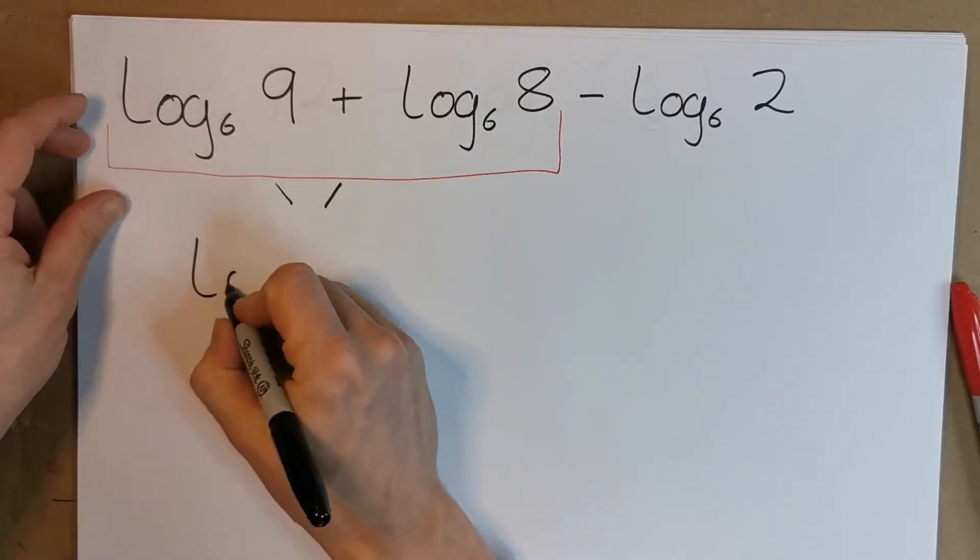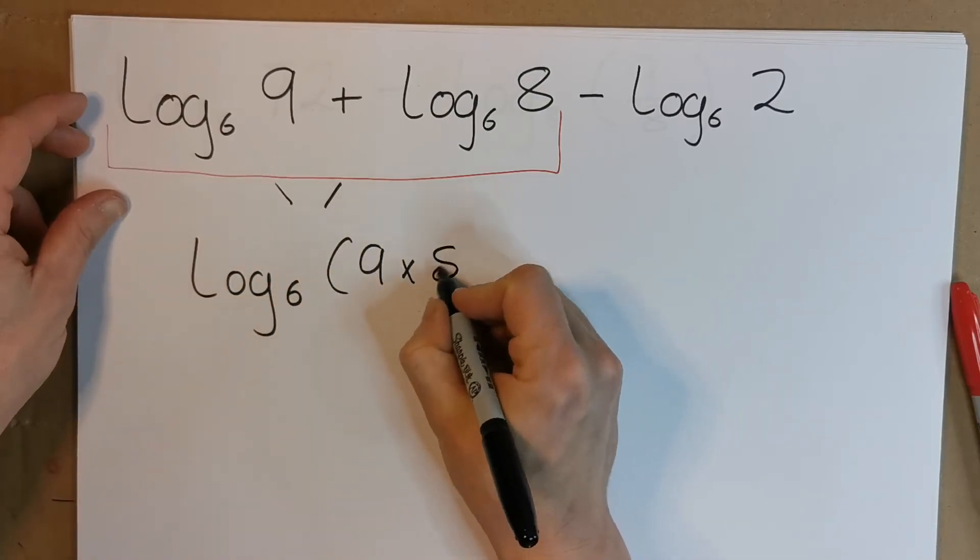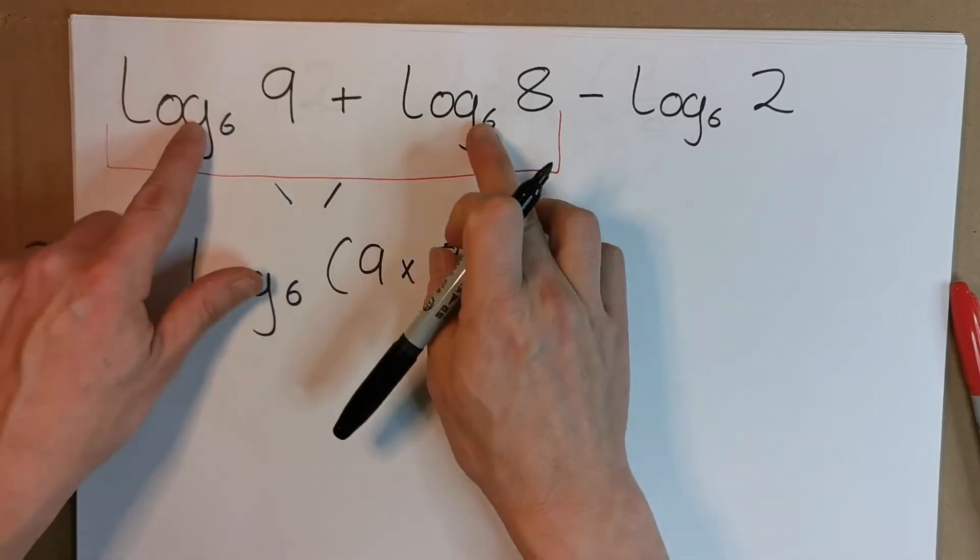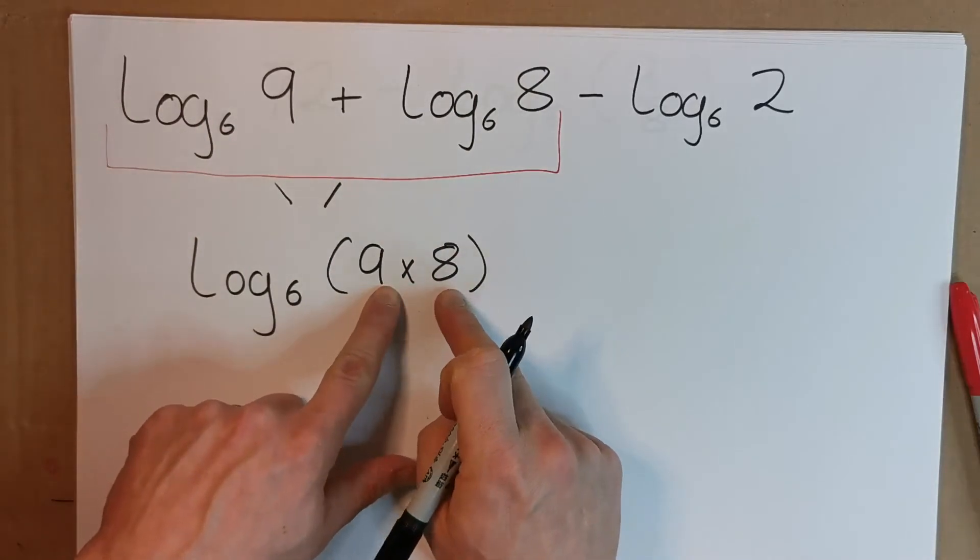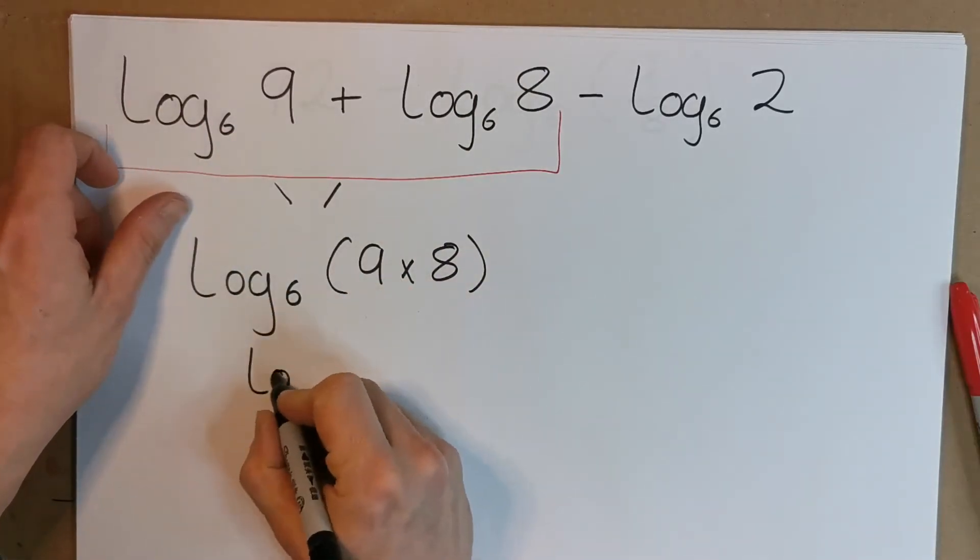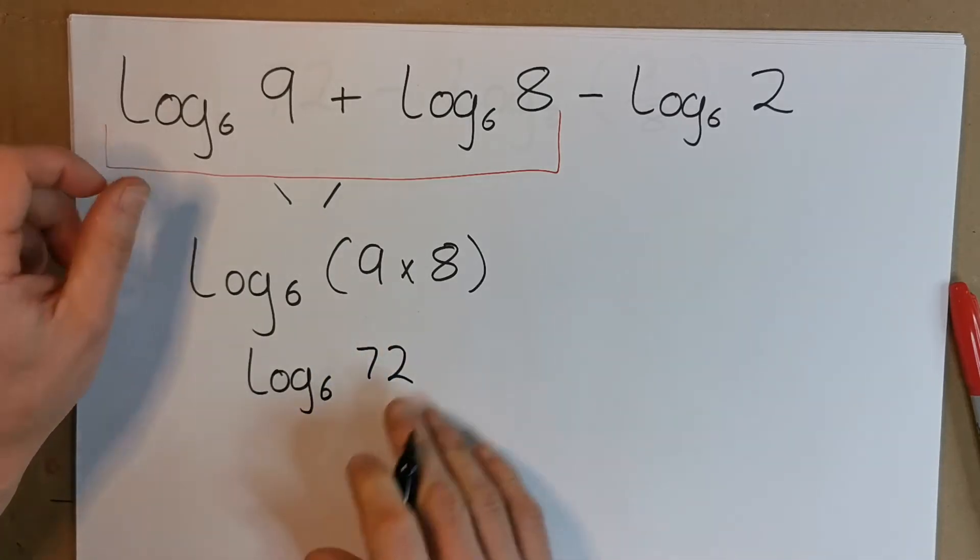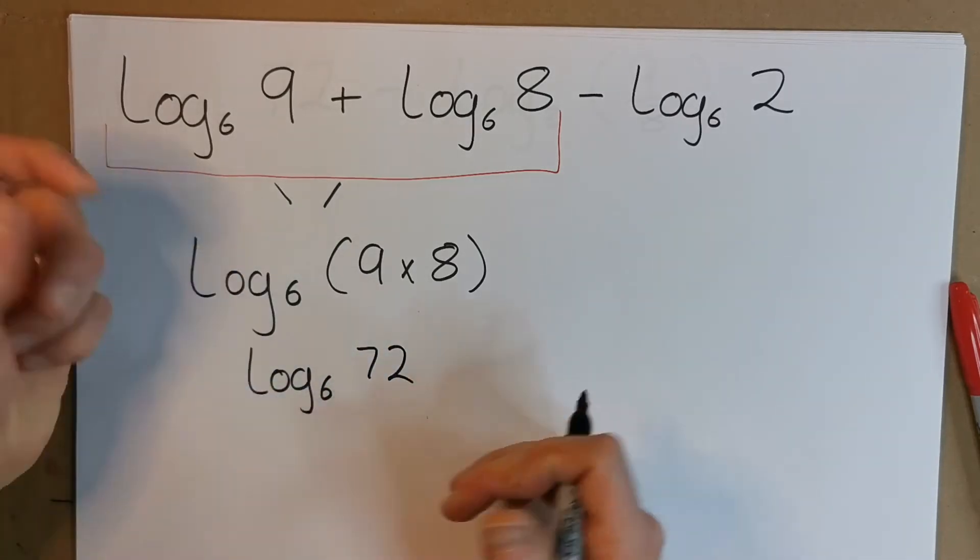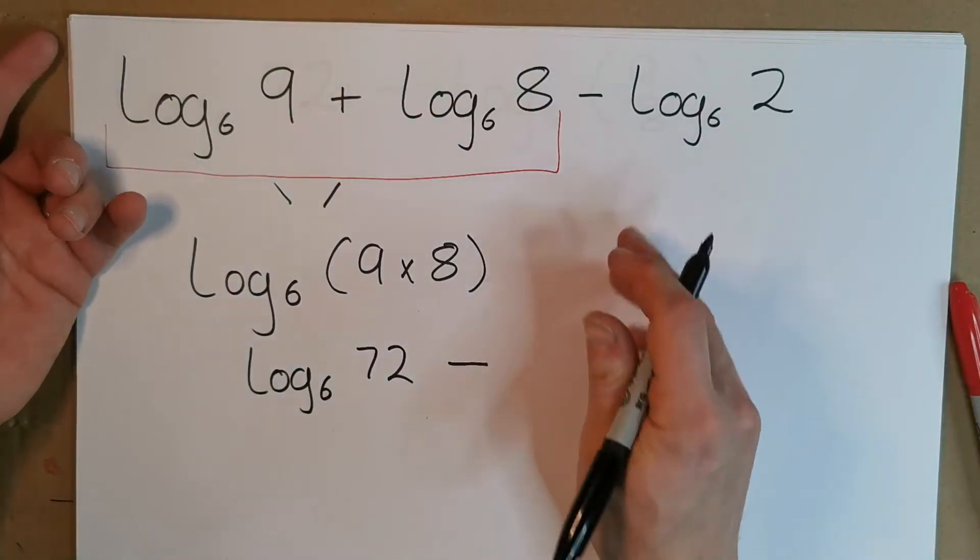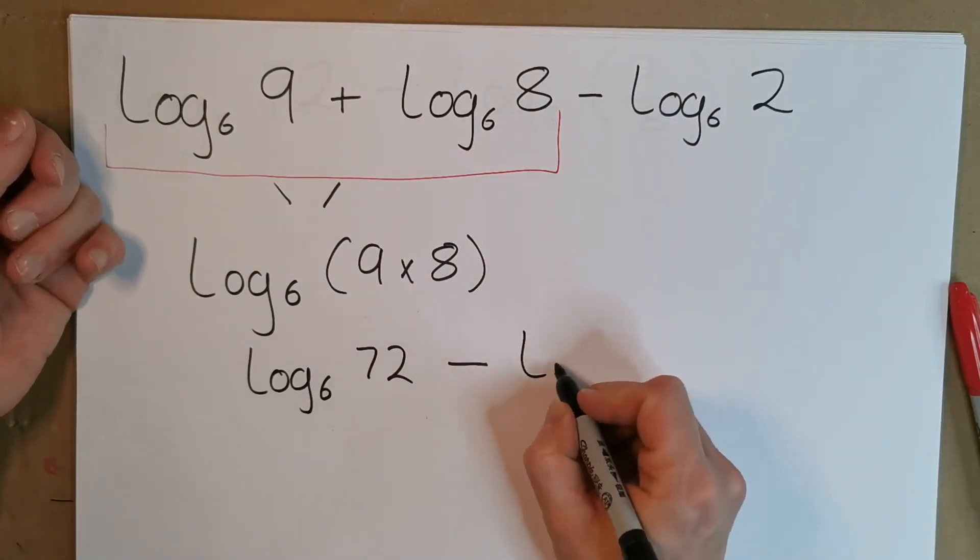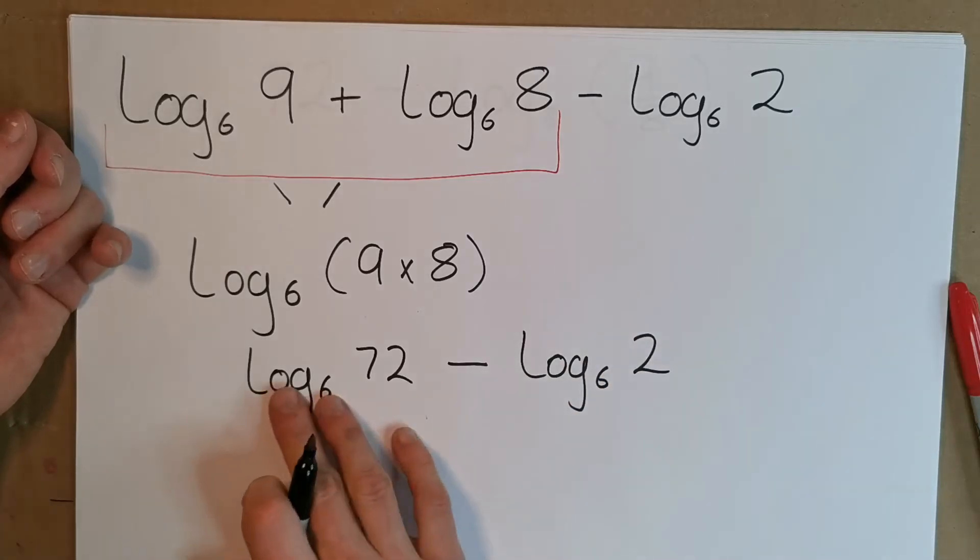That's what the rule says: you can split a multiplication to two additions, or equally you can bring the two additions, as long as they're the same base, into a multiplication. So it's the log base 6 of 72. Now before I go ahead and try to solve that, I'm going to look at this part. I can do the mental arithmetic in my head and see where this is going: the log base 6 of 2.